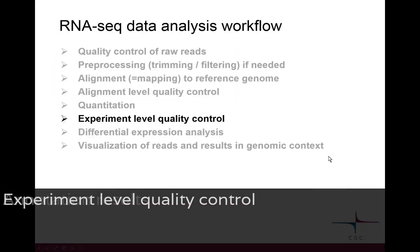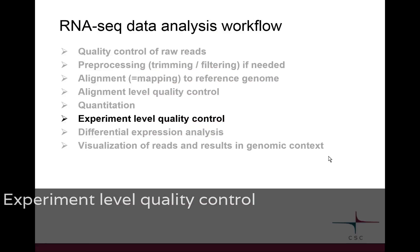So it's the third quality control step. We did the quality control of the raw reads, then we did the quality control for the alignment level, and now we do it for the whole experiment level.